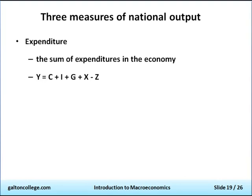Continuing the formula: plus X, where X stands for exports, minus Z. Z is made up of savings, imports, and taxation. So Y equals C plus I plus G plus X minus Z: Y for income, C for consumer expenditure, I for investment expenditure, G for government expenditure, X for exports, and Z is the total of taxation revenue plus imports plus savings.